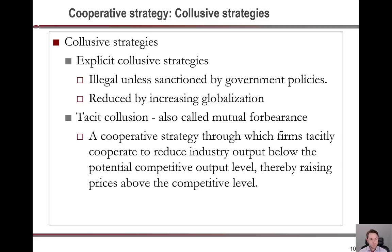Very different from typical cooperative strategy alliances, there are collusive strategies. These fall into two categories. One is explicit collusion, which tends to be illegal — occasionally sanctioned by government policy but generally illegal. These have become increasingly rare as globalization has forced the places where they occur to get stamped out.